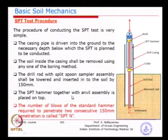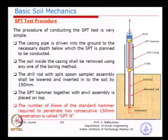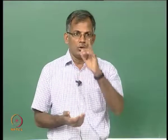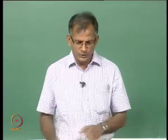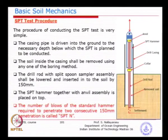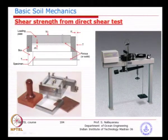The next thing I wanted to highlight is the importance and differences in carrying out the SPT test, because we are going to apply a correction factor for SPT later when we are doing empirical correlations. The test procedure is very simple: you drive the casing to a depth where you want to do the SPT, remove the soil by auger boring or wash boring methods, lower the sampler together with the drill rod, and place the SPT hammer on top of the drill rod with an anvil.